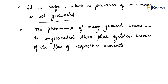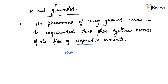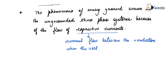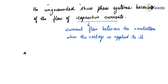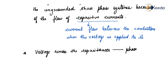Now what is this capacitive current? This capacitive current is the current that flows between the conductors when the voltage is applied to it. And this voltage across the capacitance is known as phase voltage.